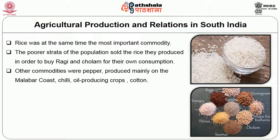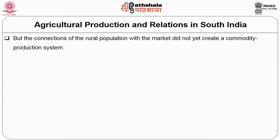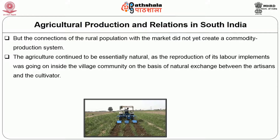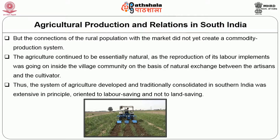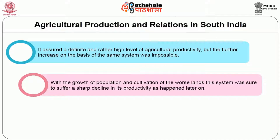The main food grain was rice, but millets — Cholam, Raghi, Varagu — occupied a comparable area. The poorest section of the population sold the rice they produced except the part taken in kind, in order to buy Raghi and Cholam. Other commodities produced included pepper mainly on the Malabar coast, chili, oil-producing crops such as sesame, flax, groundnut, and cotton. Village bazaars and fairs are mentioned in 16th and 17th century inscriptions, but connections with the market had not yet created a commodity production system. Agriculture continued to be essentially natural, with reproduction of implements going on inside the village community through natural exchange between artisans, blacksmiths, carpenters, and cultivators. The system was extensive in principle, oriented to labour-saving rather than land-saving.